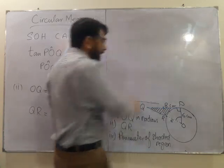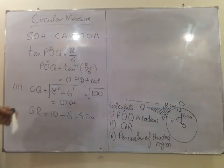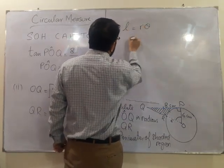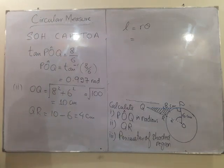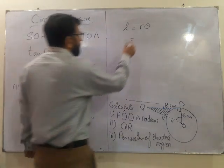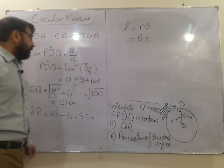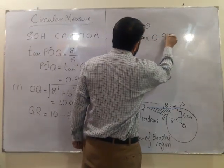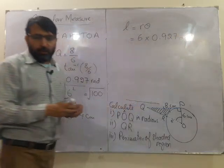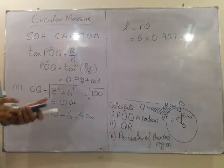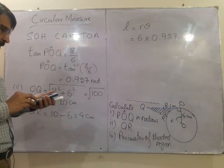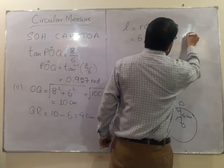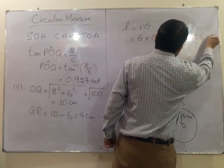Circular arc PR can be found by using the arc length formula that is L equals R theta. The radius of this circle is 6 and theta as we have found over here 0.927. This is going to give us 5.56 centimeters.